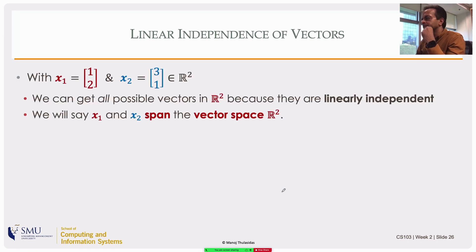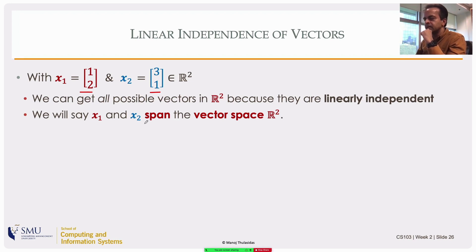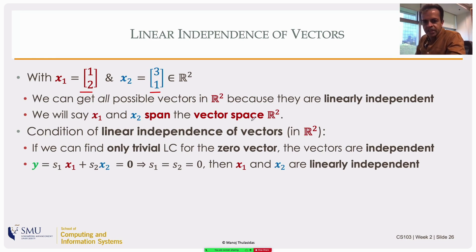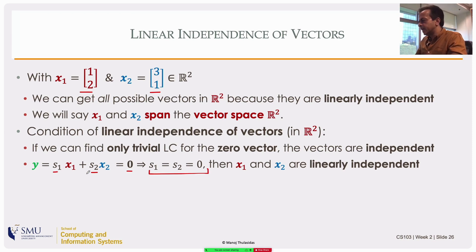These two vectors actually span all of R2. Span means I can get any vector in R2 starting from these two vectors — these two particular vectors, not any two. The reason for being able to do that is the concept of linear independence. These two vectors are what we call linearly independent, and then they span all of R2. If the vectors are such that you cannot get the zero vector by taking a non-trivial linear combination, then these two vectors are called linearly independent.